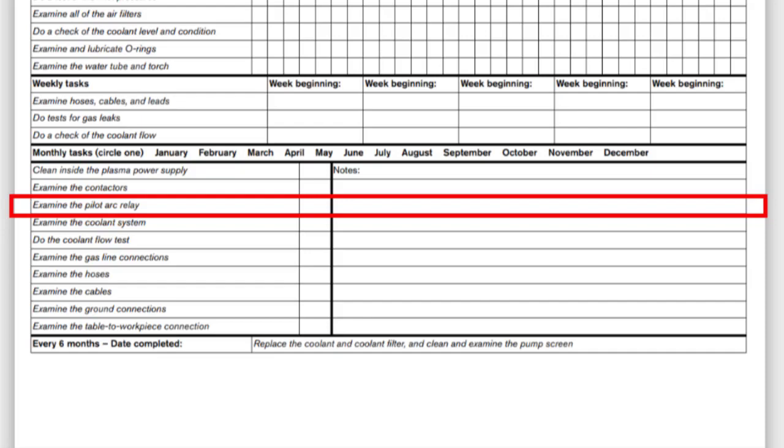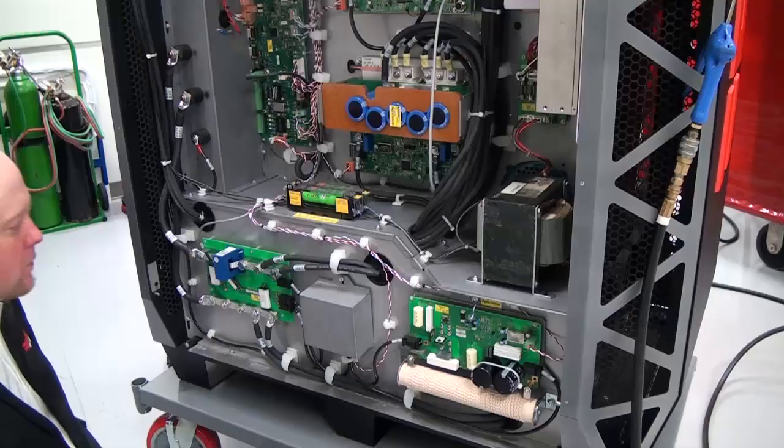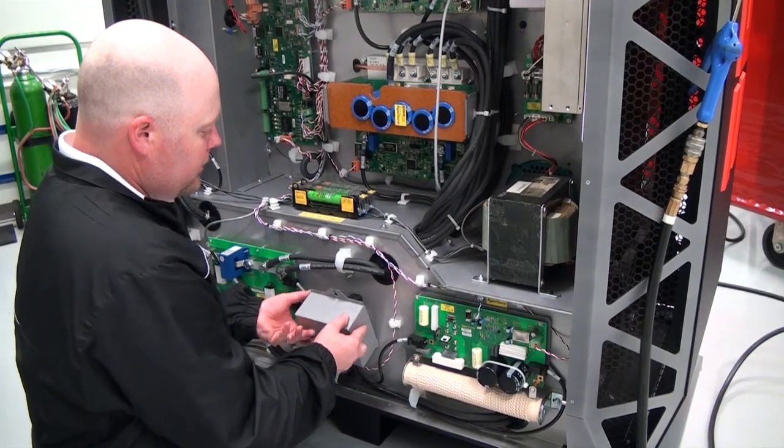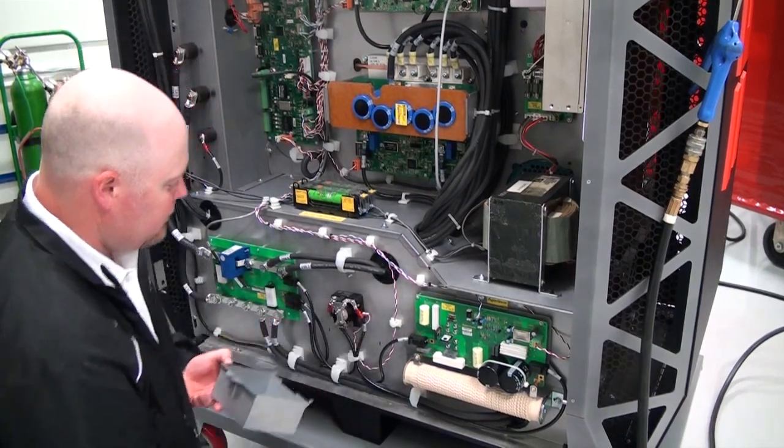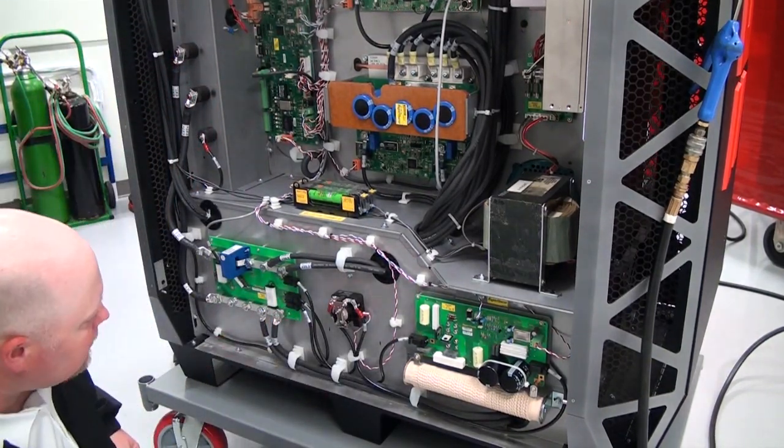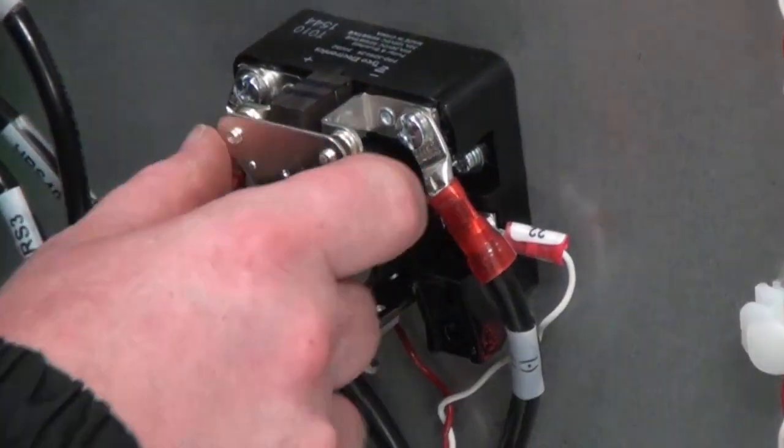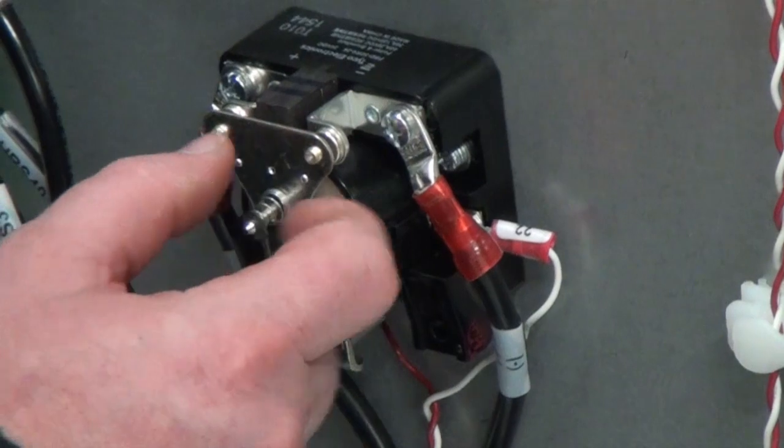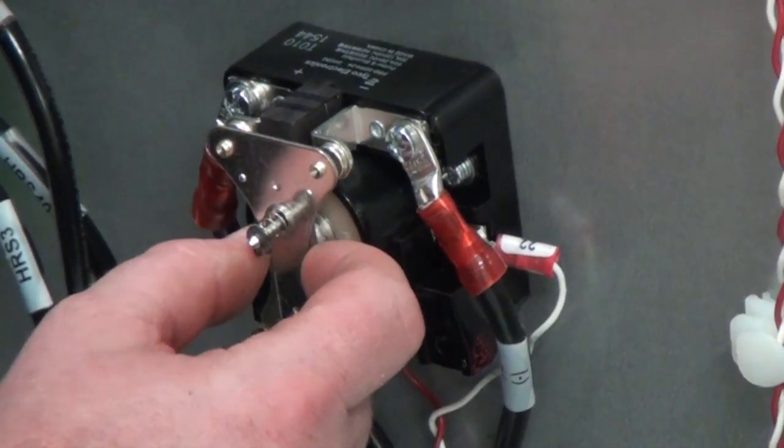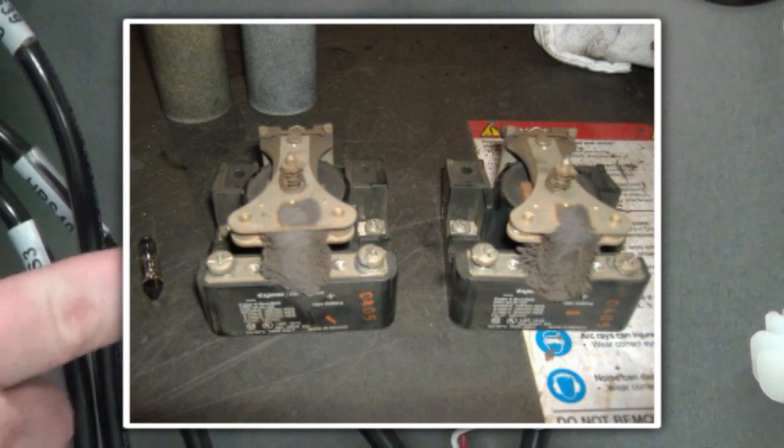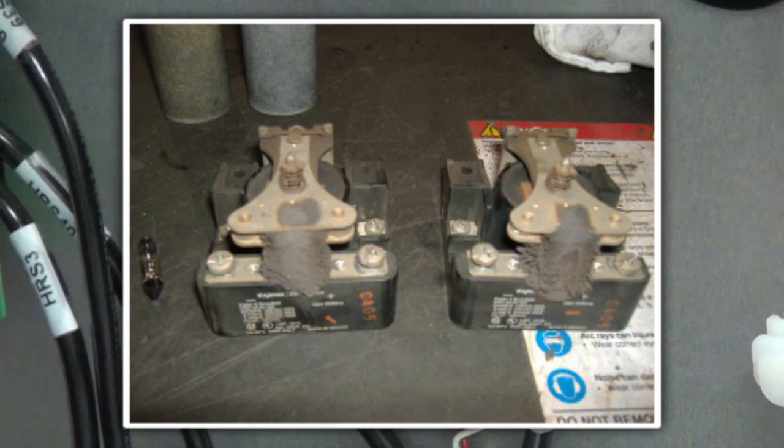The next check calls for an examination of the pilot arc relay. Removal of the pilot arc relay cover will be required for this inspection. The pilot arc relay will be inspected the same way as the contactors. Look for blackened or pitted surfaces on the contact points and replace as needed. Also look at the coil. The pilot arc relay utilizes a magnetic relay and may build up metal dust. Over time, this may short the contacts or cause the contacts not to move freely. This may result in poor cut quality and poor consumable life.